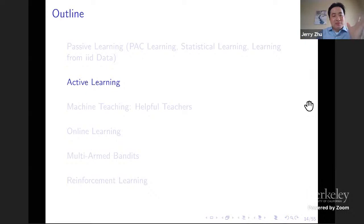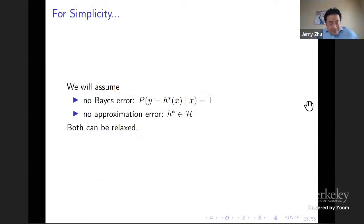Let's move on to active learning. This is where the learner starts to play a more active role. For simplicity, we'll assume no Bayes error — if you query x, the oracle always gives h*(x) as the answer — and no approximation error, meaning the true concept is in the learner's hypothesis space.